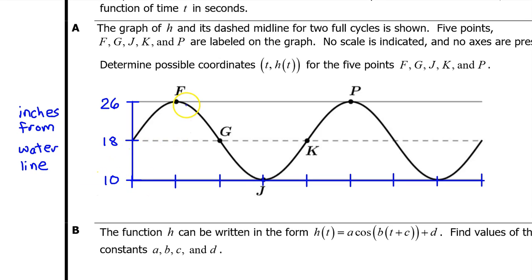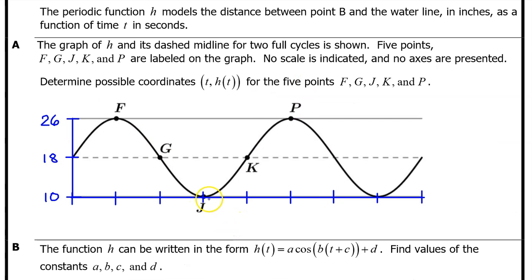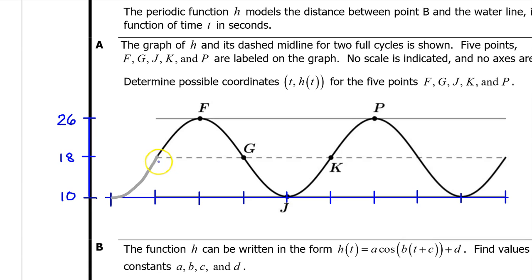We've found the output coordinates for each of the five points. Now let's find the input coordinates. At time t equals 0, point B is directly above the center of the motor. This means the distance from the waterline is at a minimum, so we assign t equals 0 to a low point on the graph. To avoid negative input values, we extend the graph one more quarter period to the left, then call that low point t equals 0 so all other input values will be positive.